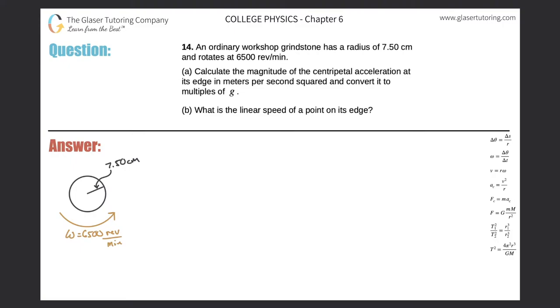Number 14. An ordinary workshop grindstone has a radius of 7.5 centimeters and rotates at 6,500 revolutions per minute. Calculate the magnitude of the centripetal acceleration at its edge in meters per second squared and convert it to multiples of g.